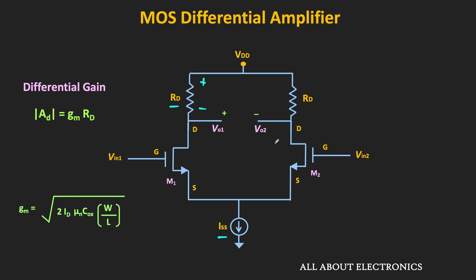But by modifying this differential amplifier circuit, it is possible to improve the gain. Step by step, we will modify this circuit and see how we can increase the gain, and eventually we will see the circuit of the high gain differential amplifier.